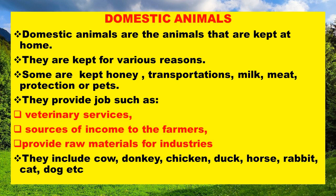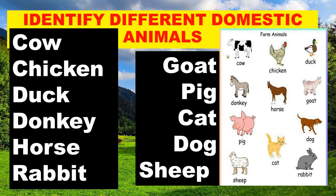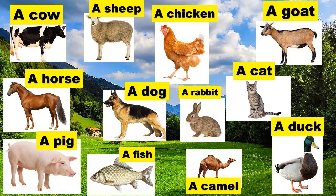As we continue to learn about domestic animals, let's also identify different domestic animals. A cow, a sheep, a chicken, a goat, a hen, a horse, a dog, a rabbit, a cat, a duck, a camel, a fish, and a dog.